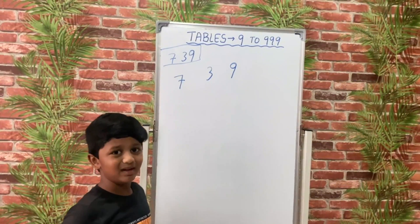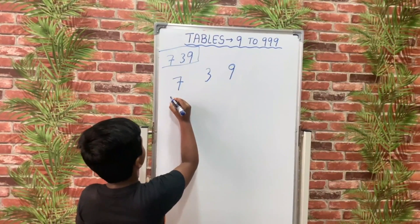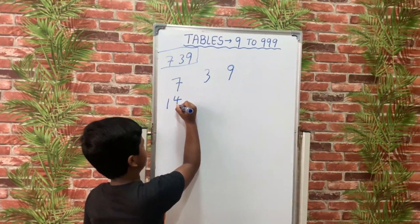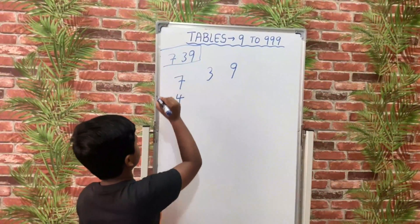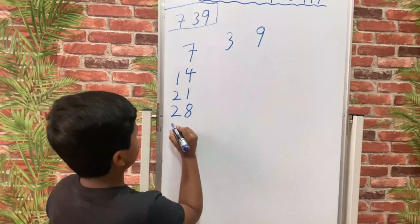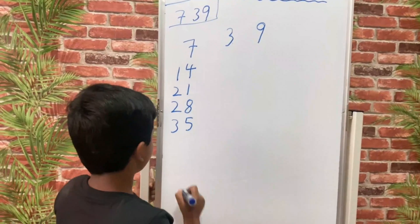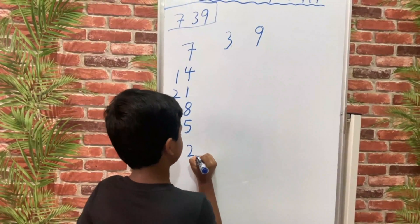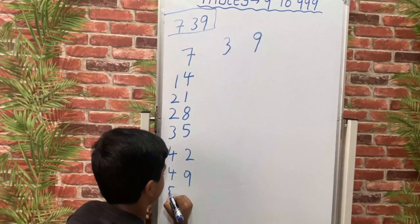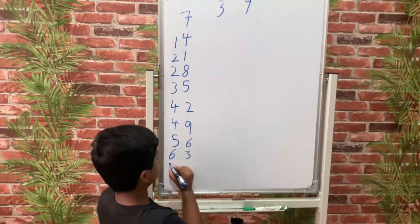We will write the 7 times table: 7×1 is 7, 7×2 is 14, 7×3 is 21, 7×4 is 28, 7×5 is 27, 7×6 is 42, 7×7 is 49, 7×8 is 56, 7×9 is 63, 7×10 is 17.